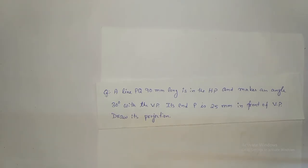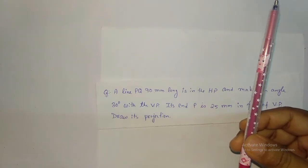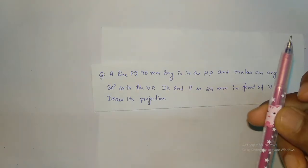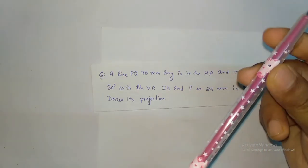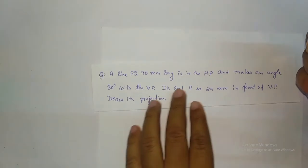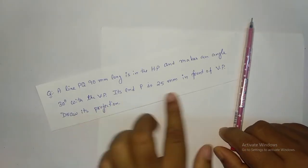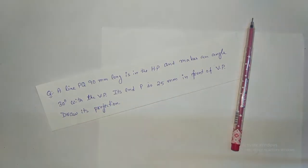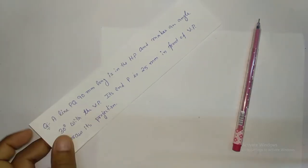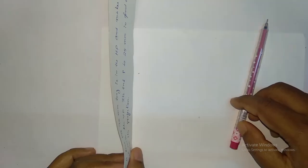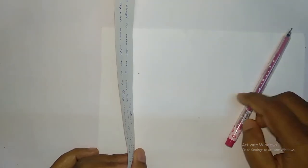Based on the question, I am going to formulate this. Suppose this is your straight line — a line PQ 90 mm long. So this is in the HP. And it makes an angle 30 degrees with the VP. Suppose if this is my VP, so it is telling that it makes an angle 30 degrees with the VP, meaning it is making an angle like this — 30 degrees with the VP.